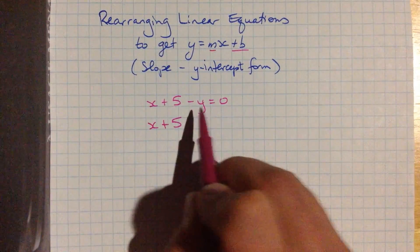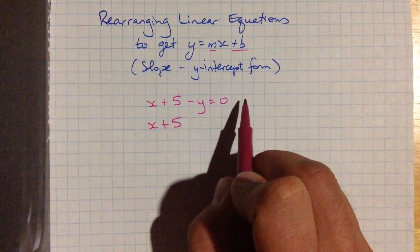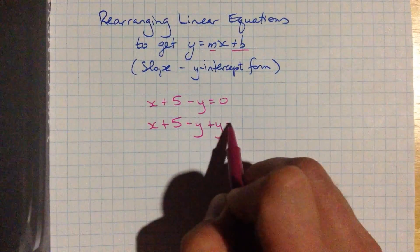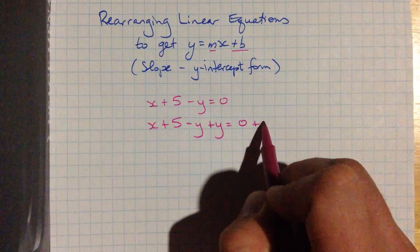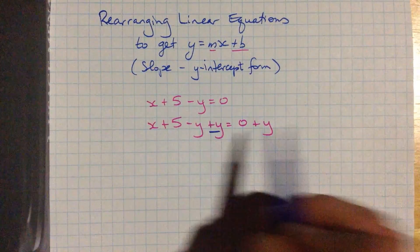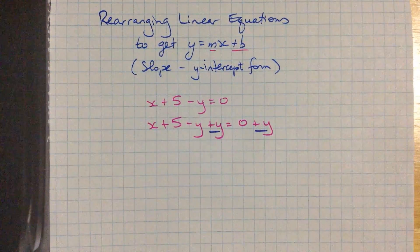x plus 5. I want to get rid of this y and kind of move it over there. To do that, I'm going to add y to each side of the equation. Here I've added plus y here, and here. Same thing on both sides.